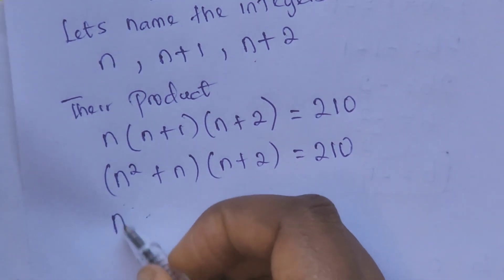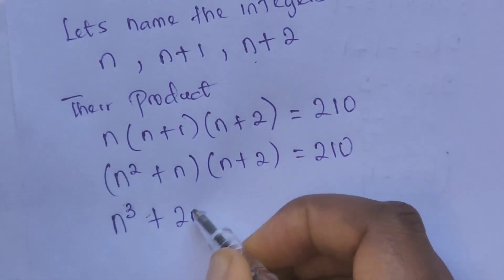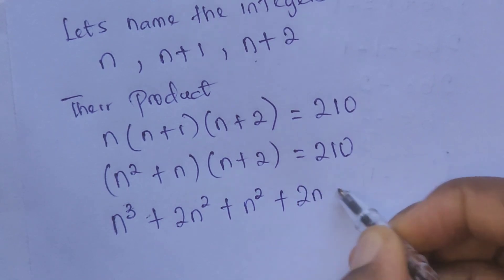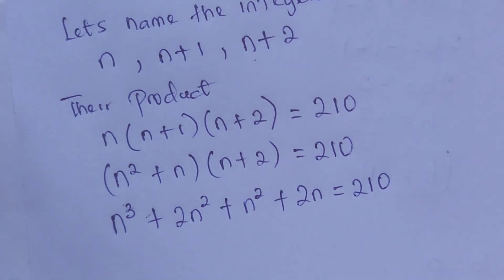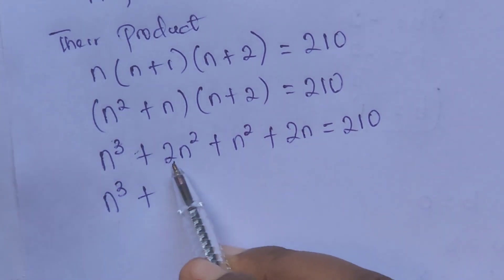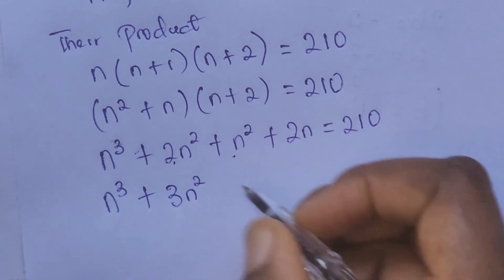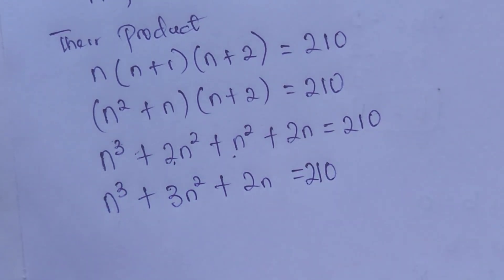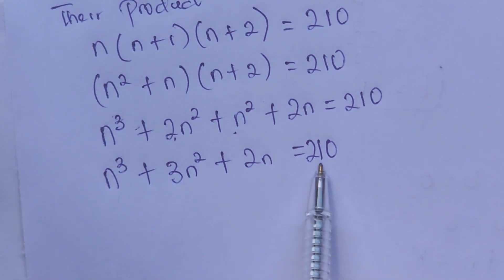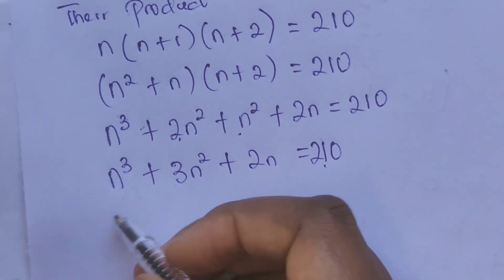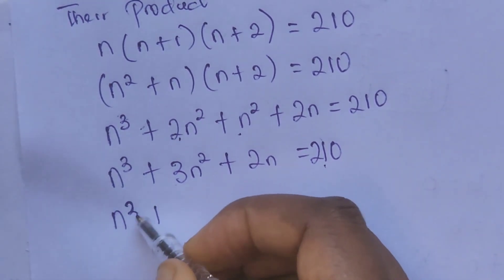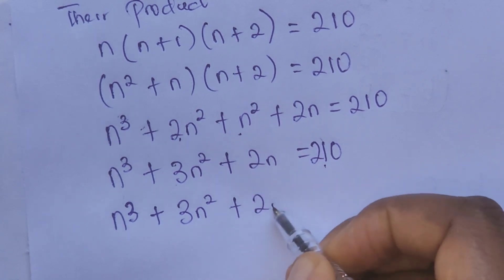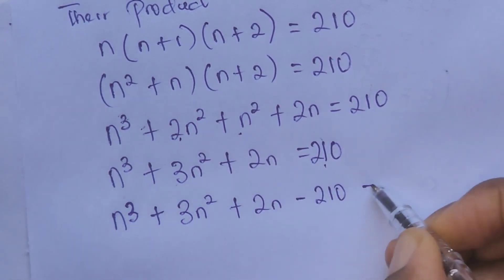When we open up these brackets we have n to the power of 3, plus 2n squared, plus n squared, plus 2n, equal to 210. Combining like terms: n cubed plus 3n squared plus 2n equals 210. Moving 210 to the left-hand side gives us n cubed plus 3n squared plus 2n minus 210 equals zero.